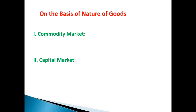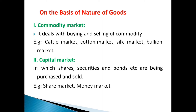Let's start with the commodity market. This market deals in physical material produce, manufactured goods — maybe consumer and industrial — and bullion market dealing in precious metals. So it deals with buying and selling of commodities. For example, cattle market, cotton market, silk market, and bullion market.